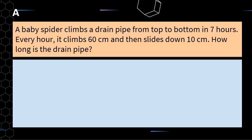Today we're going to look at one word problem and see how we go putting it into a number sentence using grouping symbols. A baby spider climbs a drainpipe from top to bottom in seven hours. Every hour it climbs 60 centimeters and then slides down 10 centimeters. How long is the drainpipe? I'll use the CUBE strategy — circling the numbers: 7, 60, and 10. Underlining the question: how long is the drainpipe?